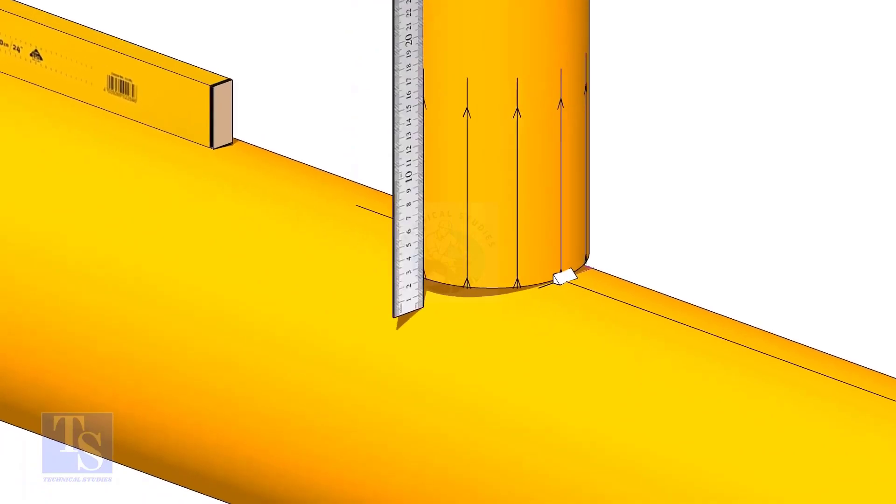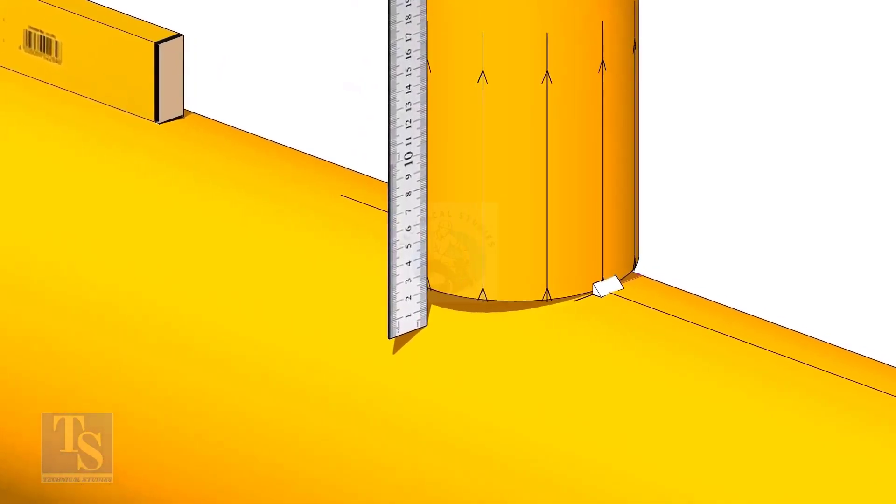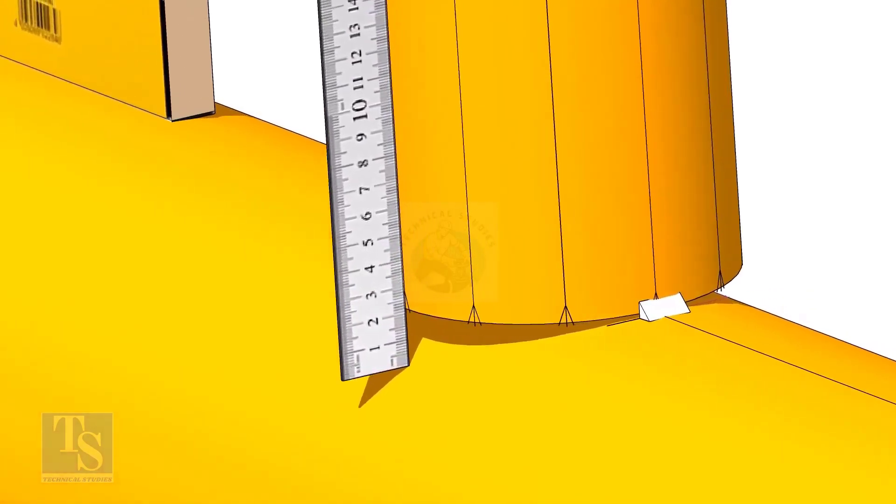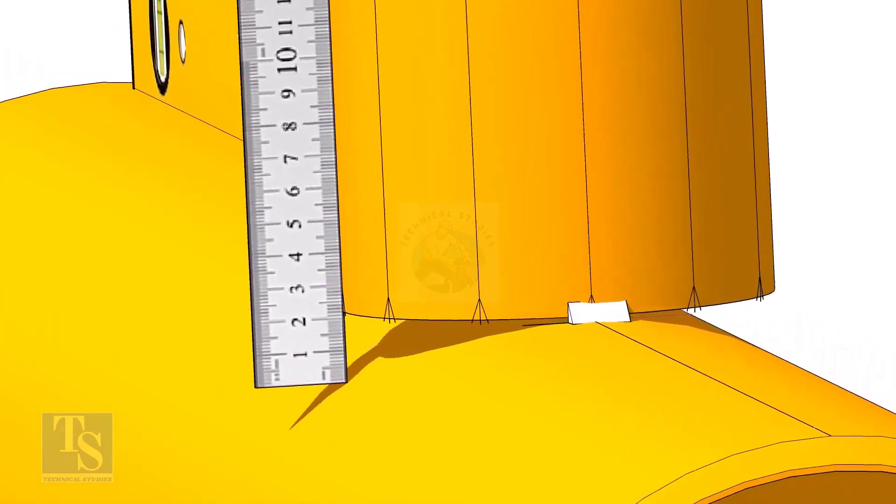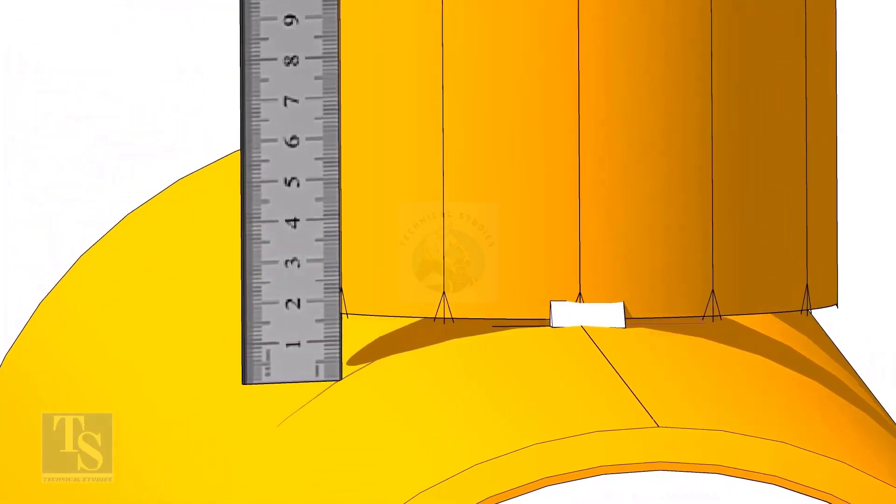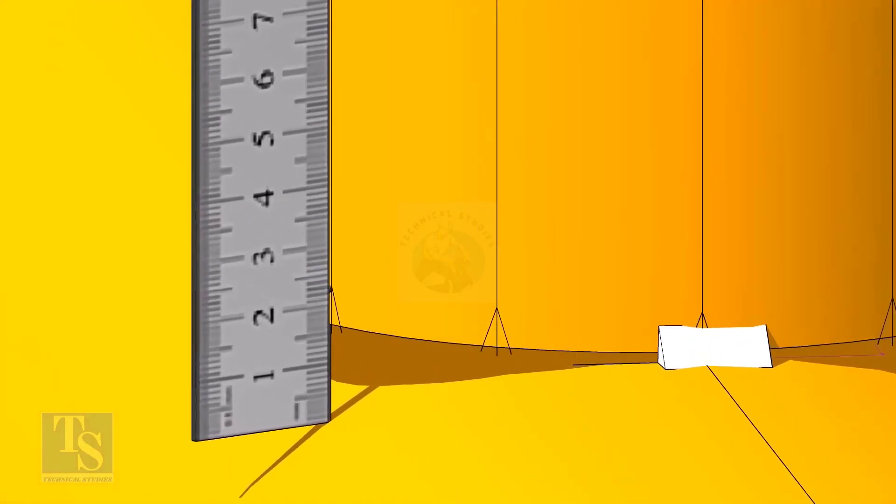Check the gap between the header and the branch as shown. When you measure, make sure the scale is vertical and is on the line on the branch pipe. Move the scale to the next vertical marking on the branch. Mark the distance on the branch from the header. In this case, it is 22 millimeters.